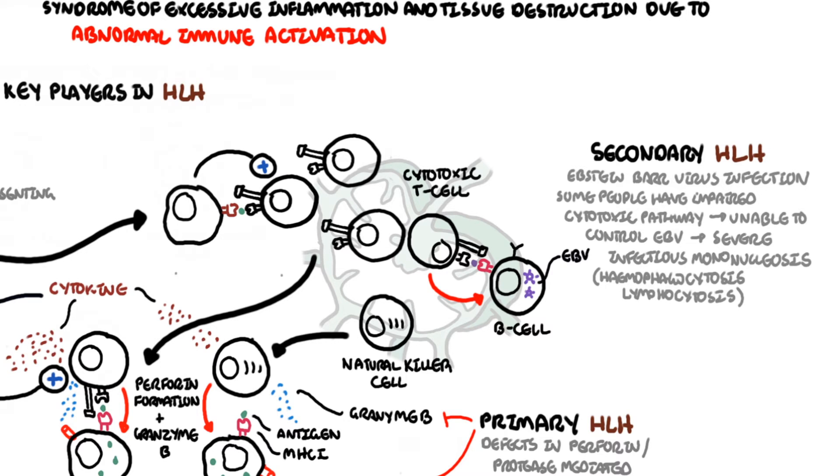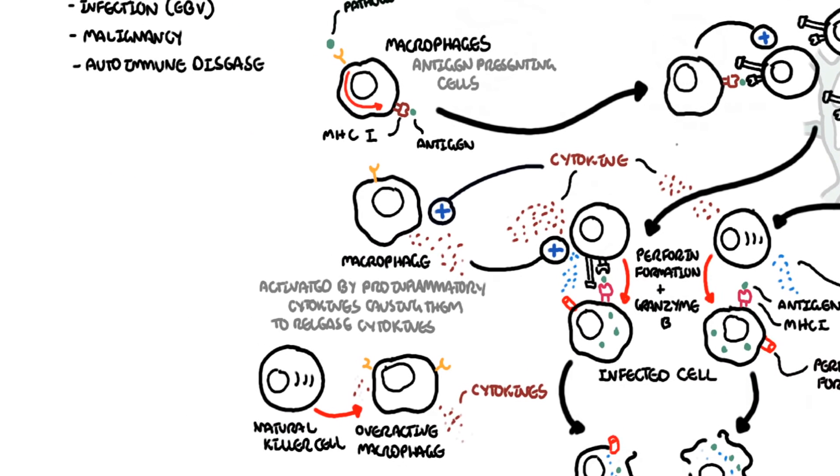The key principle to know about the different causes of hemophagocytic lymphohistiocytosis is that you have activation of cytotoxic T-lymphocytes as well as hyperactive macrophages.